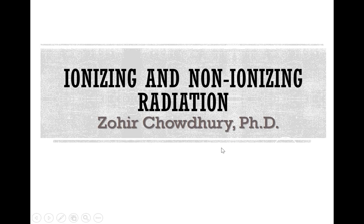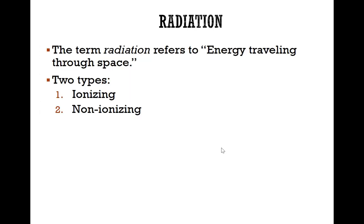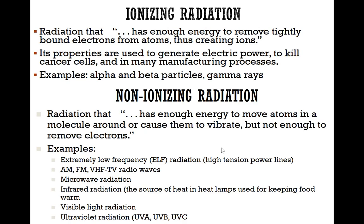Hello everybody, my name is Zohri Choudhury and today we'll talk about ionizing and non-ionizing radiation. The term radiation refers to energy traveling through space, and there are two types: ionizing and non-ionizing. Ionizing radiation has enough energy to remove tightly bound electrons from atoms, thus creating ions. Its properties are used to generate electric power, to treat cancer cells, and in many manufacturing processes.